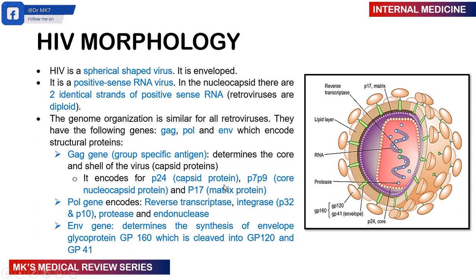The pol gene — which I assume stands for polymerase gene — encodes for the enzymes. Remember RIPE: R for reverse transcriptase, I for integrase (P32 and P10), P for protease, and E for endonuclease. Then you have the envelope gene — ENV — which codes for certain glycoproteins found on the envelope. You initially synthesize one glycoprotein known as GP160, which is then cleaved into GP120 and GP41. It's not additive — GP160 does not equal GP120 plus GP41.